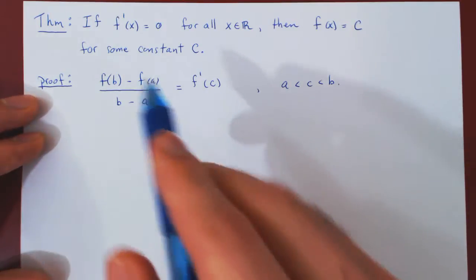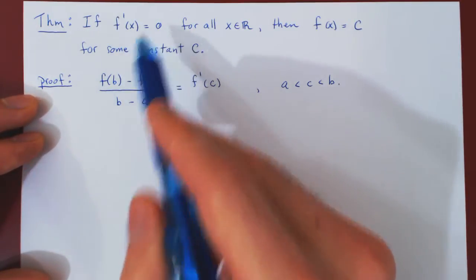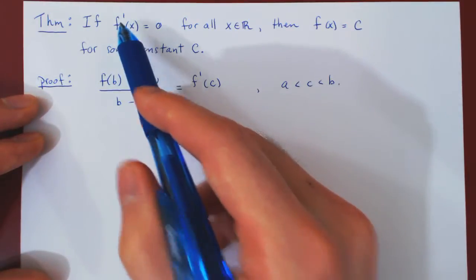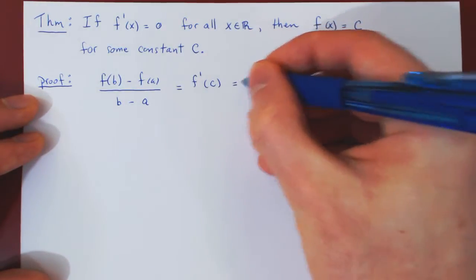But by assumption, the derivative of f at any point is equal to 0. So f prime at c must also be equal to 0.